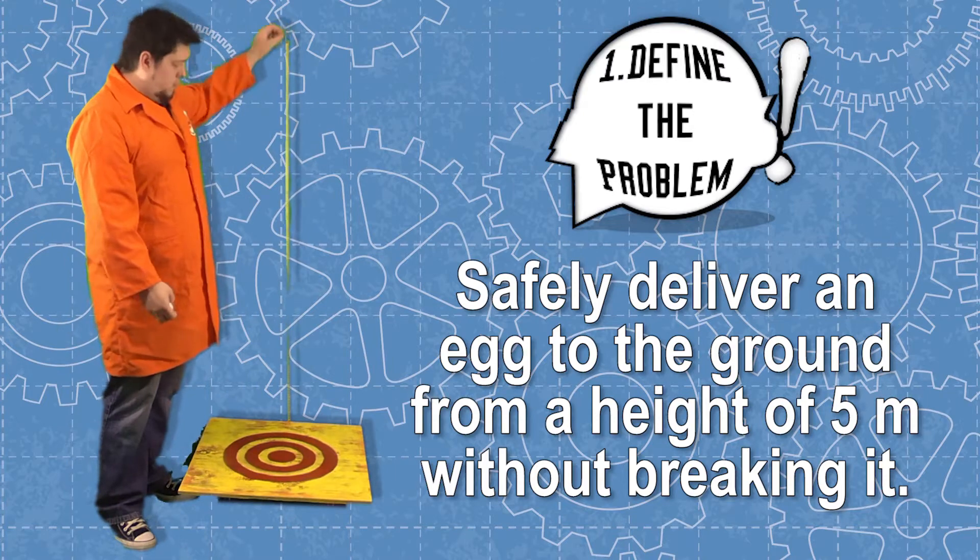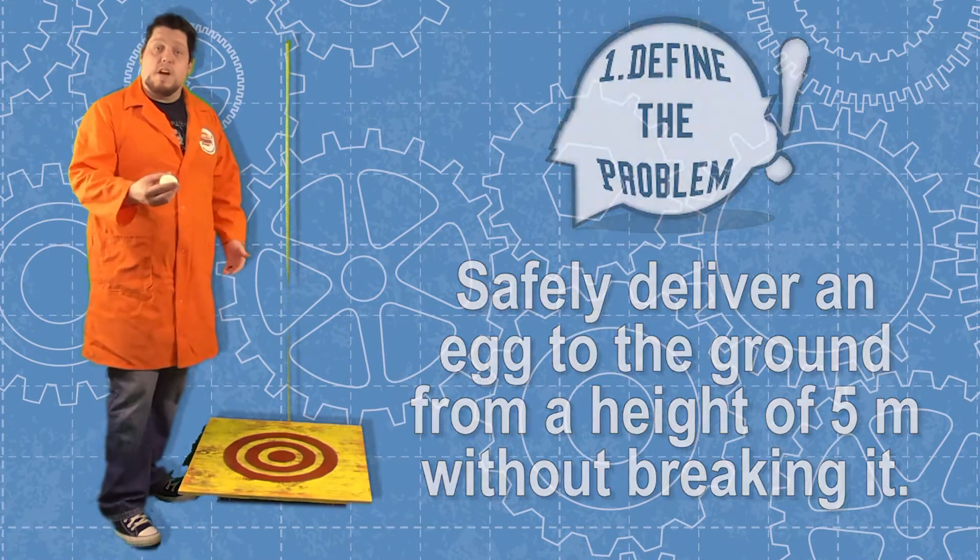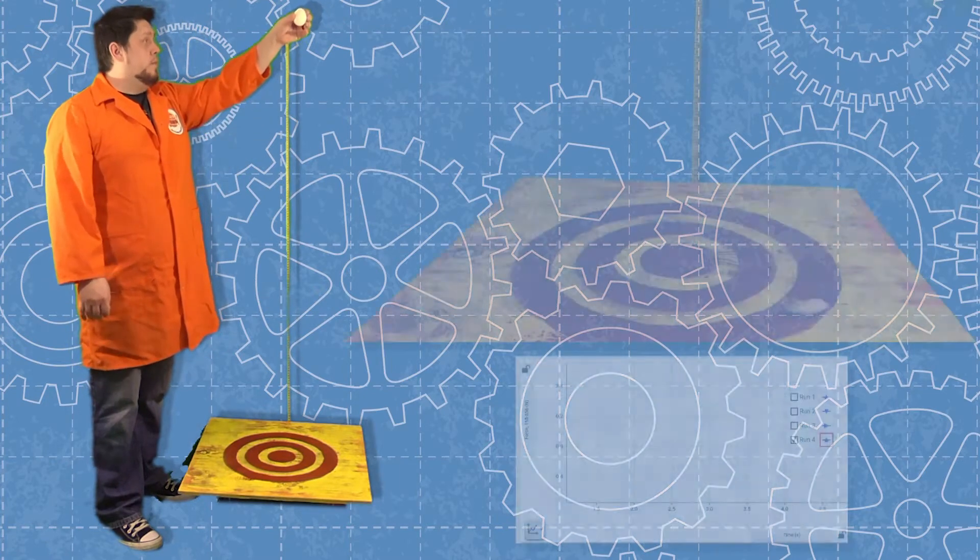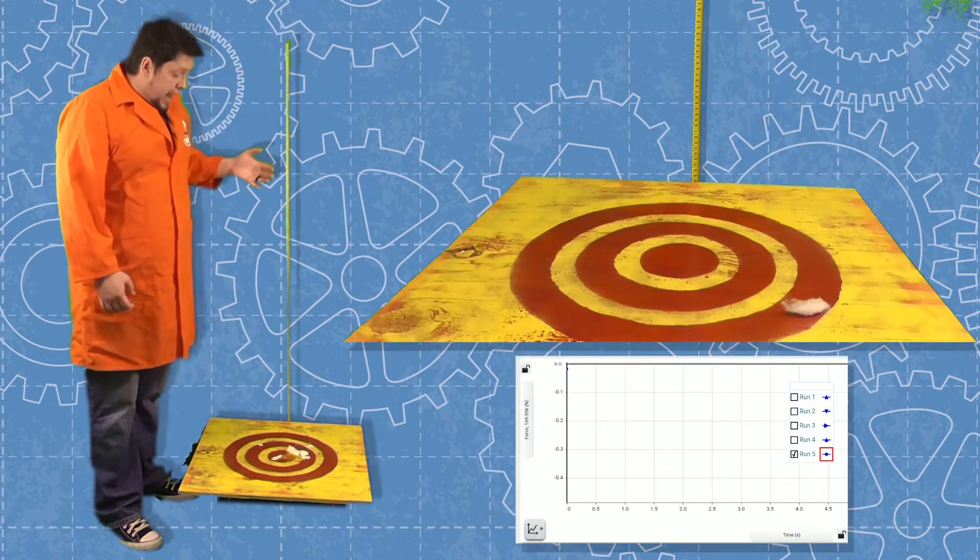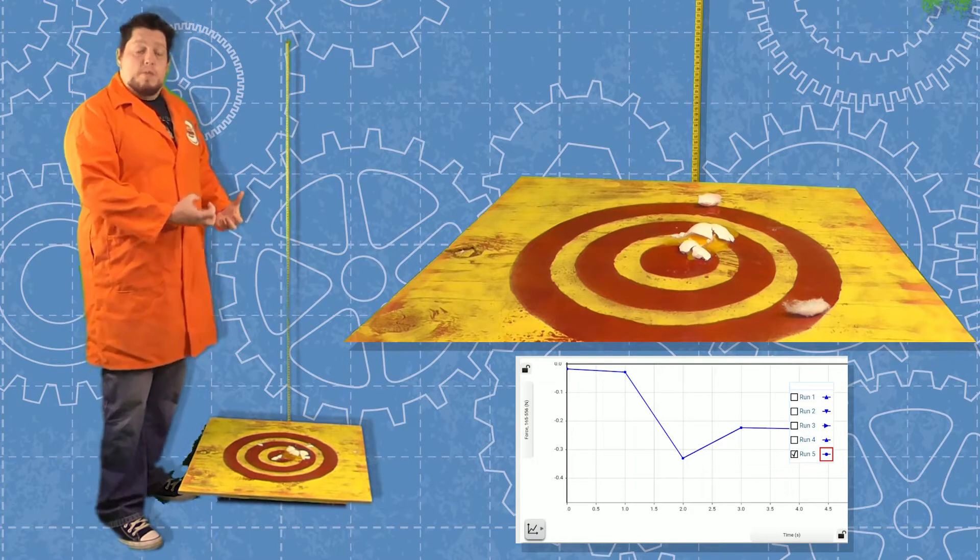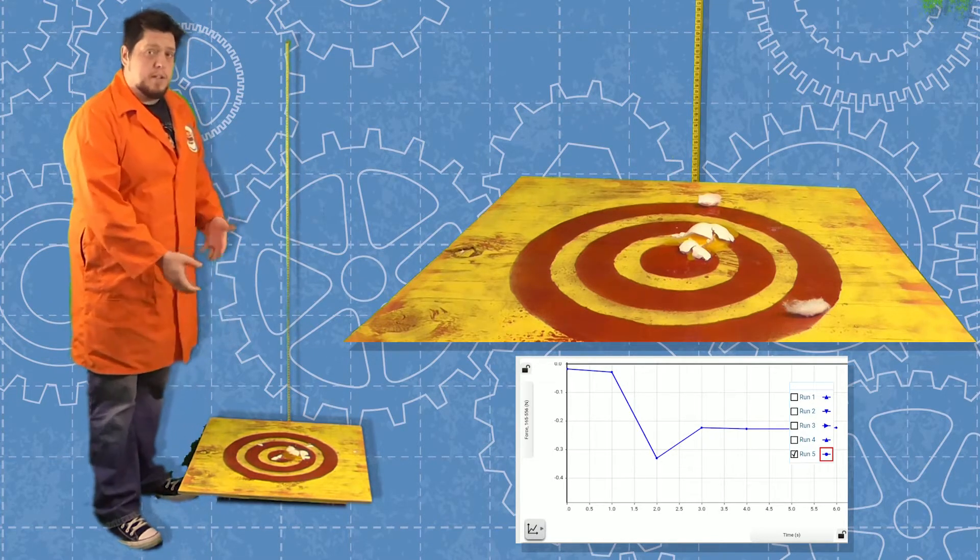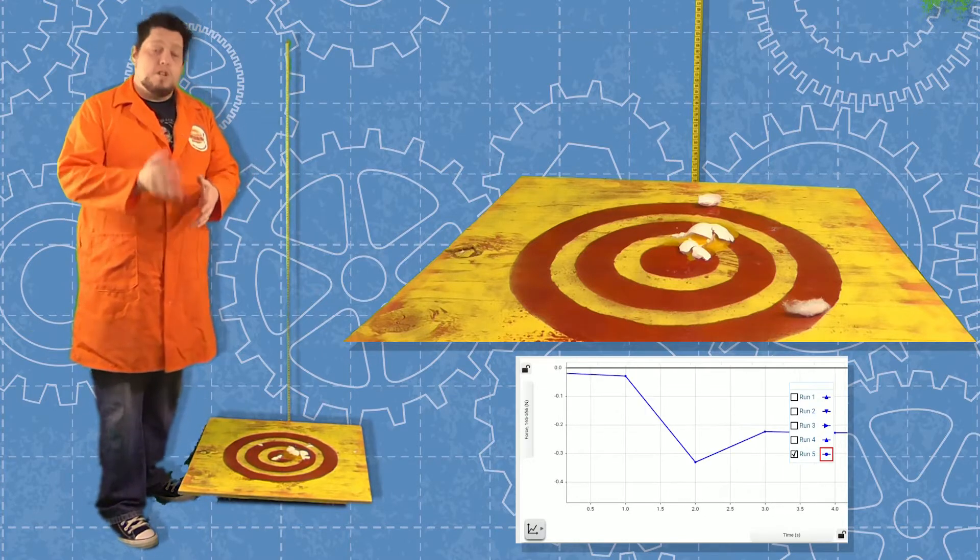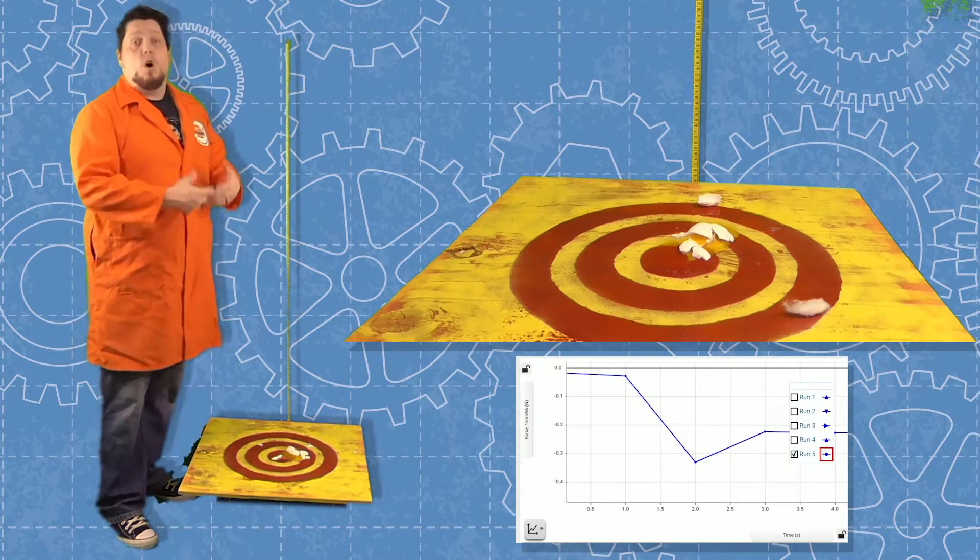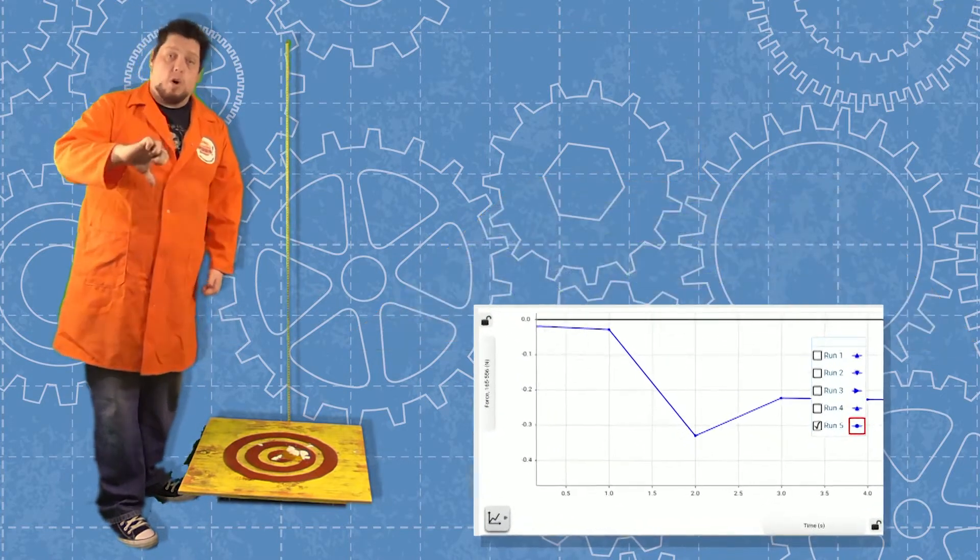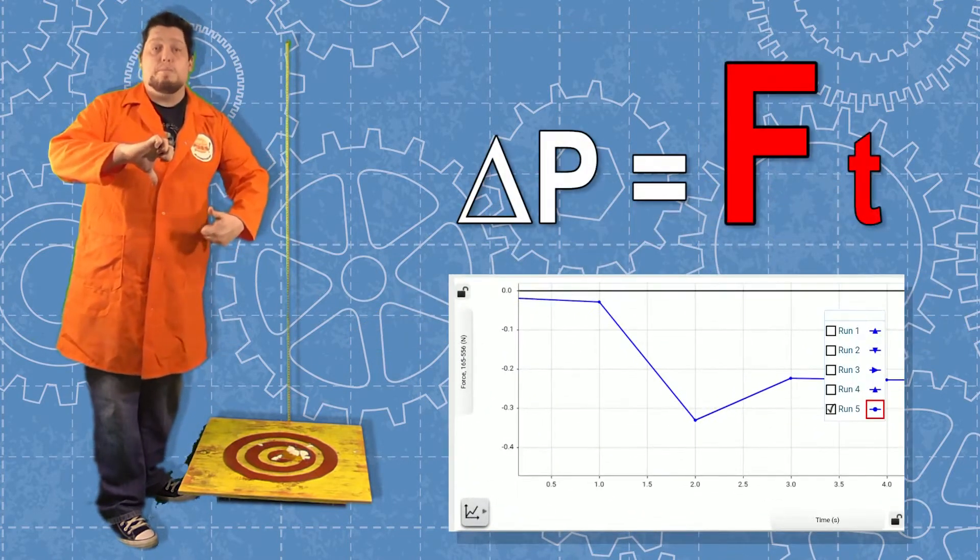Even at 1.5 meters, it's very easy to see this change in momentum. Dropped from 1.5 meters, the egg accelerates to a stop, therefore experiencing a change in momentum. This impulse is the product of the force applied to the egg over time. In this case, we can see it was a very short amount of time, so we get a big splatter